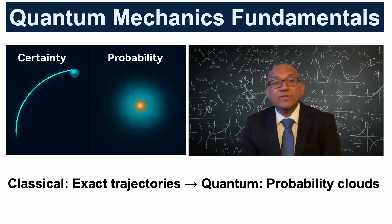In classical physics, we predict exact position and trajectory. In quantum mechanics, we can only calculate probabilities.